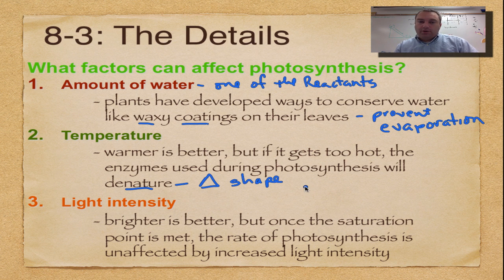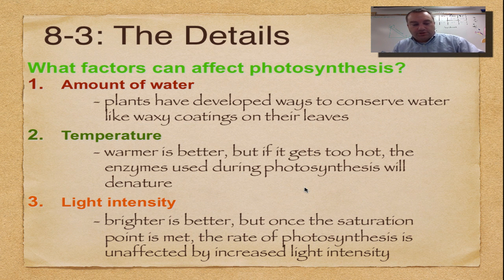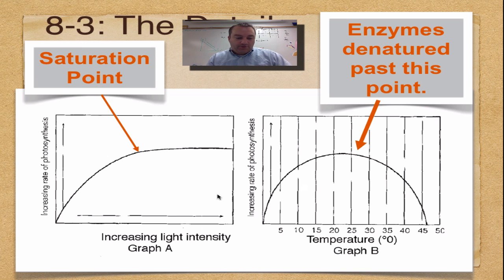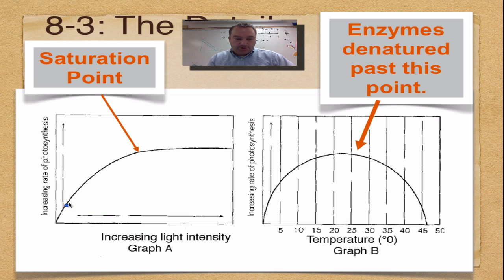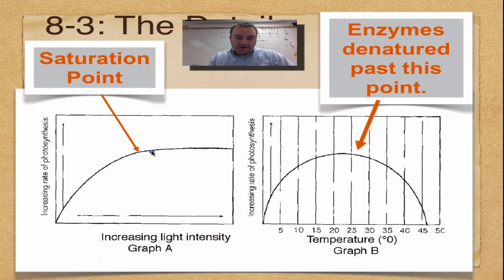For light intensity, brighter is better, but there is a point where it doesn't matter how much brighter it gets — photosynthesis can only go so fast. That is called the saturation point. In this graph, as you turn up the light, photosynthesis goes faster and faster, but once you reach the saturation point it plateaus. That plateau is simply the fastest that photosynthesis can occur.